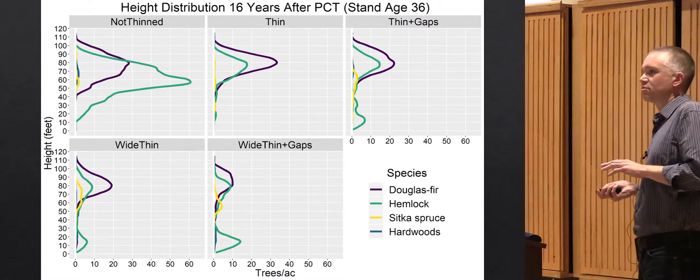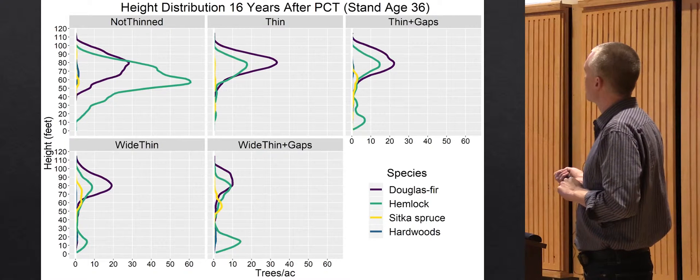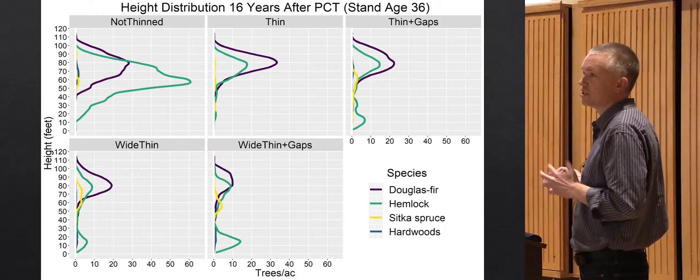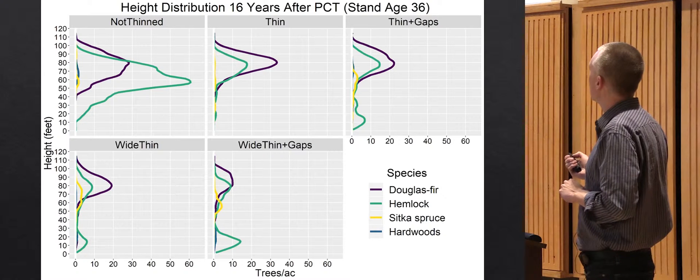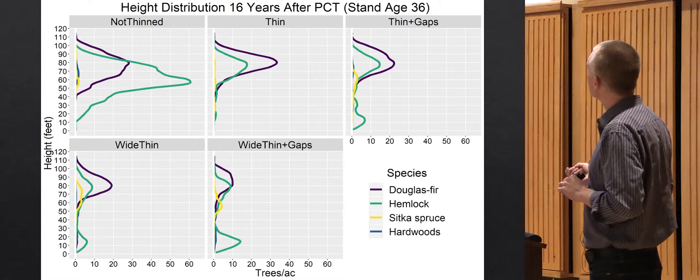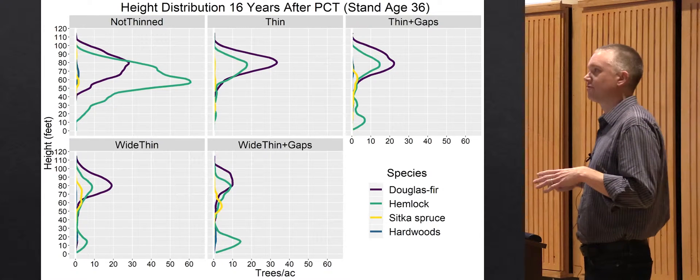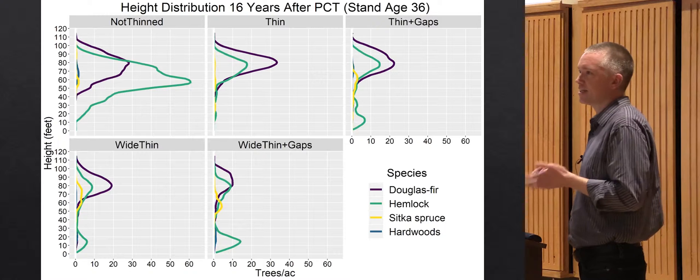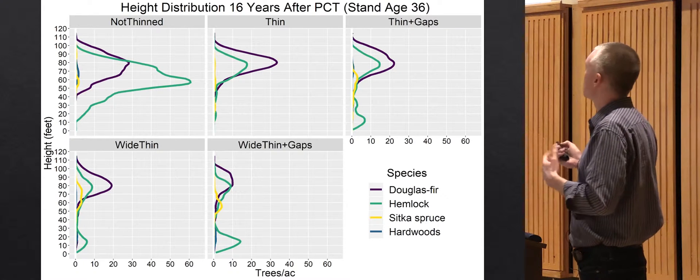I'm going to show a few graphs now to illustrate some things that weren't visible in the photos. This is the height distribution of different species after 16 years. On this horizontal axis we have number of trees per acre, here we have the height. What we're looking at is a frequency distribution of the different species. Of course you got the most here in the unthinned treatment. A few things to point out: the Douglas fir are still among the tallest trees in each treatment, taller than the hemlock. The overstory in these stands is all pretty much Doug fir and hemlock.